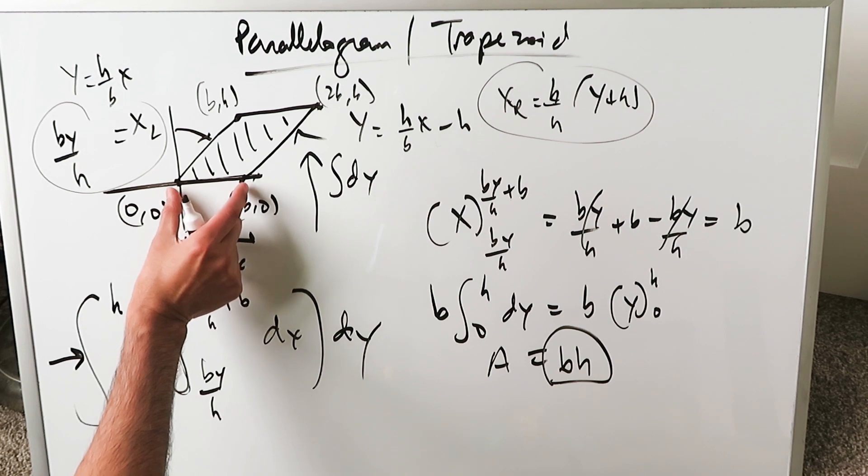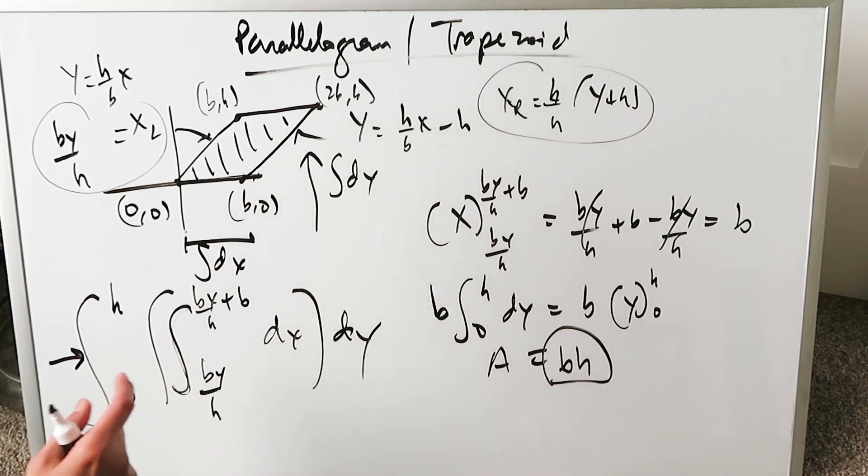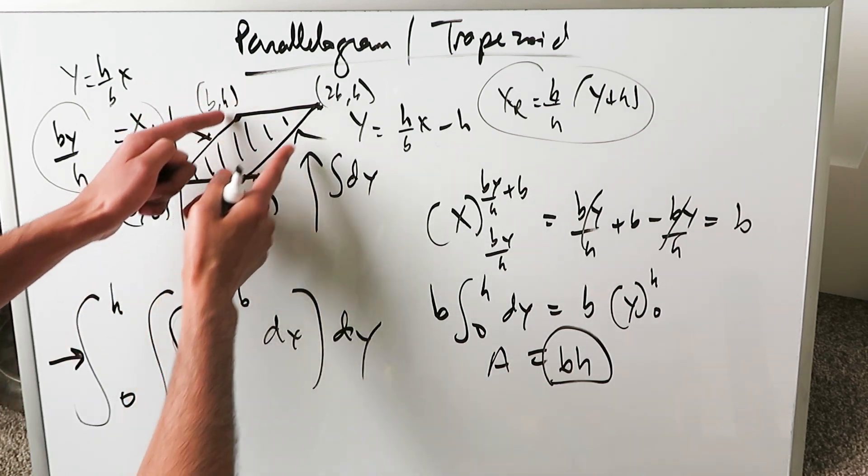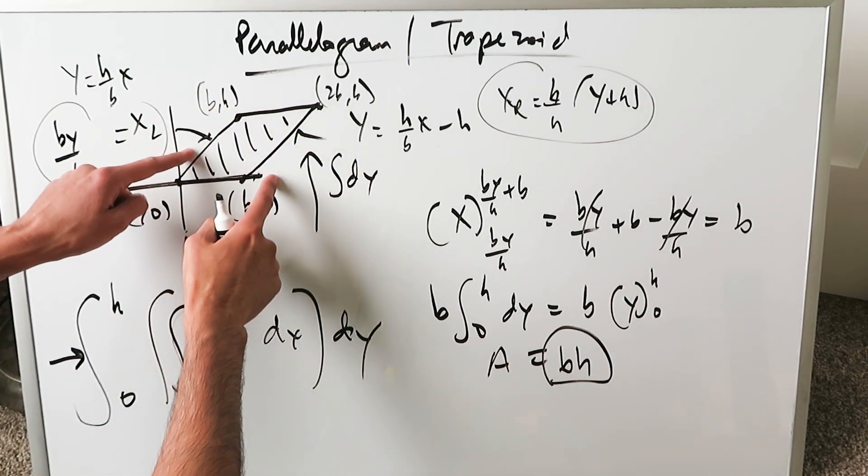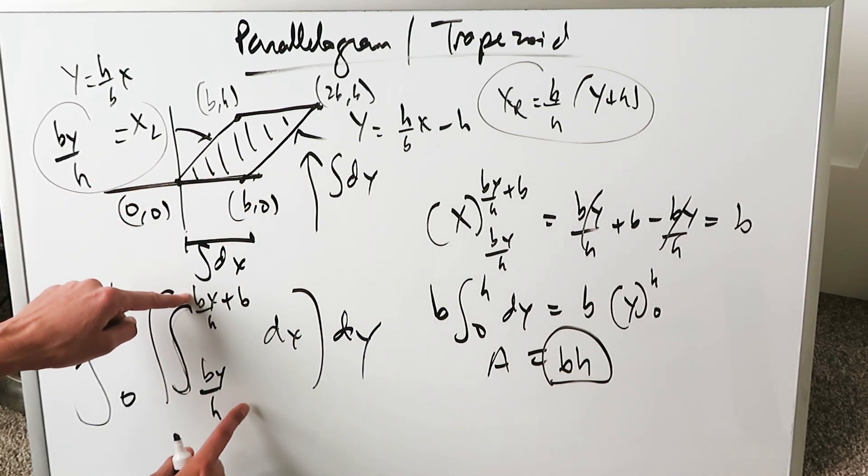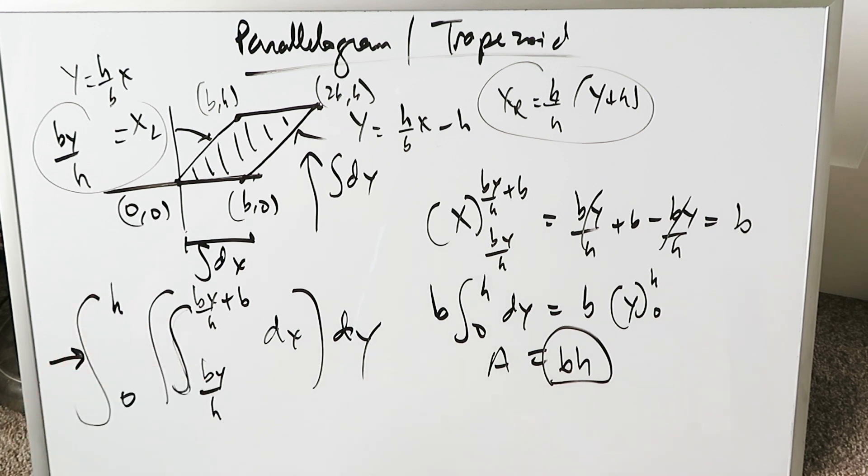Base times height is the area formula for a parallelogram. We started with an integral with respect to dx along the x-axis, integrating upwards. Since we cannot trace directly up, we go parallel along lines being traced. Those equations of lines serve as your new upper and lower limits.